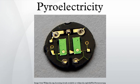Pyroelectricity should not be confused with thermoelectricity. In a typical demonstration of pyroelectricity, the whole crystal is changed from one temperature to another, and the result is a temporary voltage across the crystal. In a typical demonstration of thermoelectricity, one part of the device is kept at one temperature and the other part at a different temperature, and the result is a permanent voltage across the device as long as there is a temperature difference.